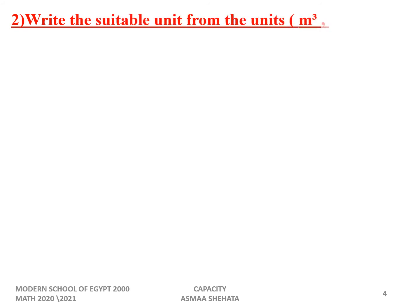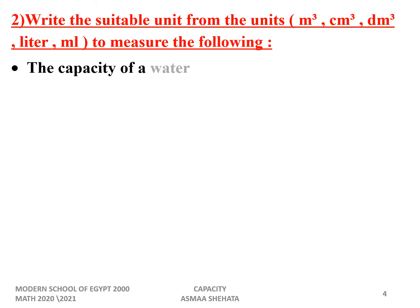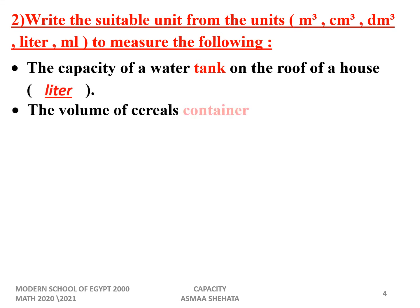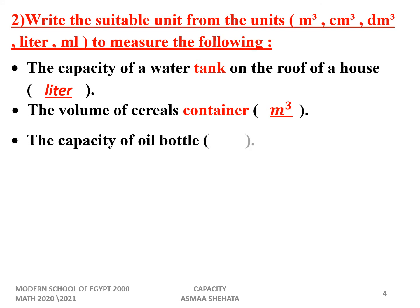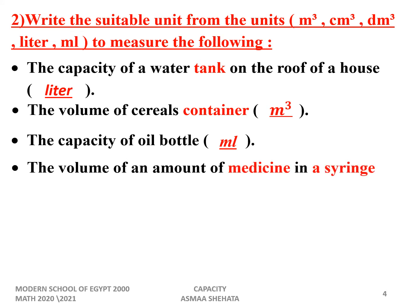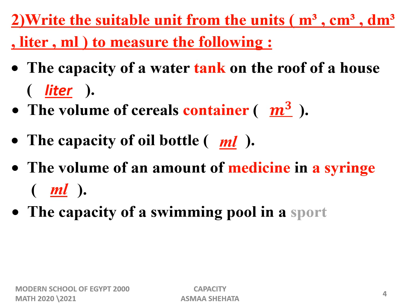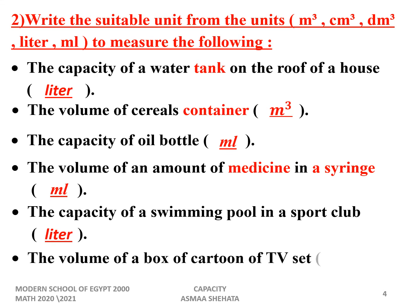Number two: write the suitable unit — meter cube, centimeter cube, decimeter cube, or milliliter — for each of the following. The capacity of a water tank on the roof: we measure it using liters. The volume of a cereals container: it is a large amount, so we use meter cube. The capacity of an oil bottle: milliliter, such as water bottles or cans. The volume of an amount of medicine: we measure it using milliliter. The capacity of a swimming pool in a sports club: using liters. The volume of a box — a cartoon of a TV set: we measure it using centimeter cube.